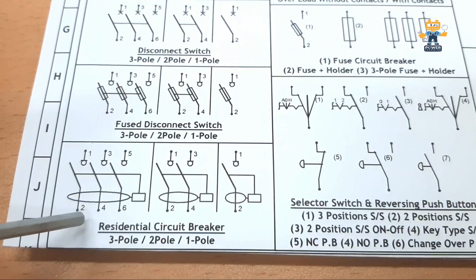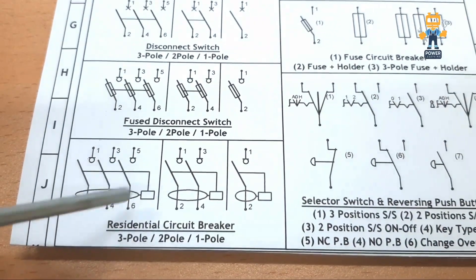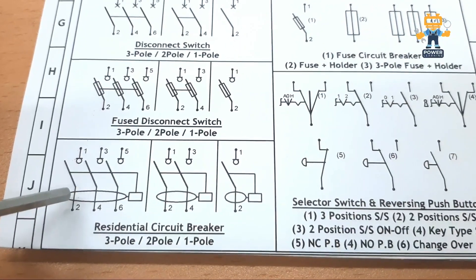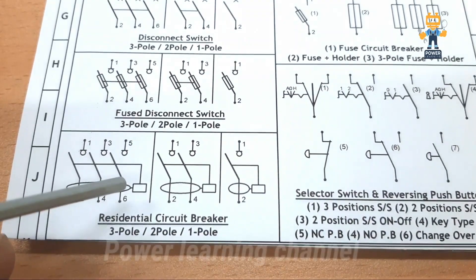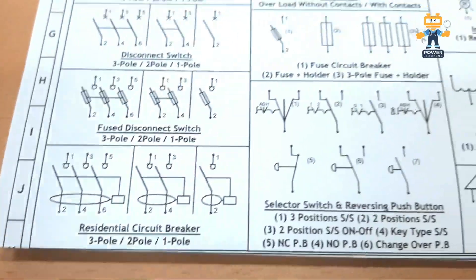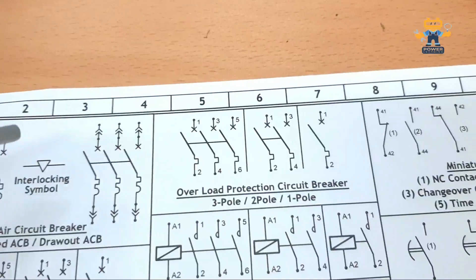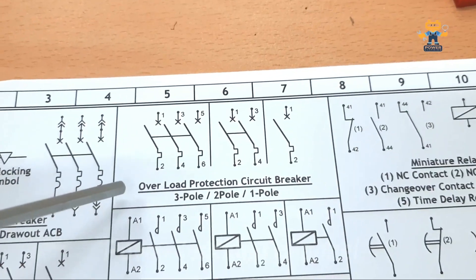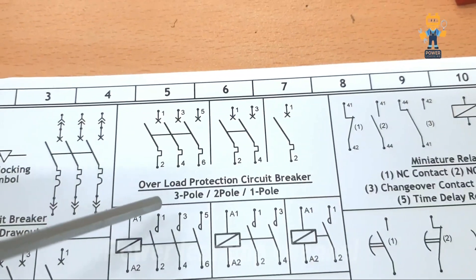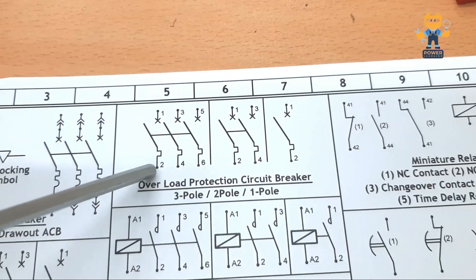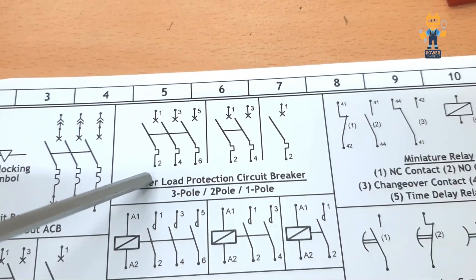Here we have the residential circuit breaker — RCB symbols in three-pole, two-pole, and single-pole. Then we have the overload protection circuit breaker, also in three-pole, two-pole, and single-pole. You just need to remember these symbols in your mind so you can easily read any drawing.